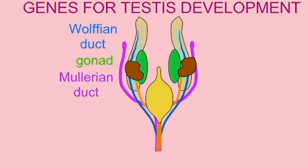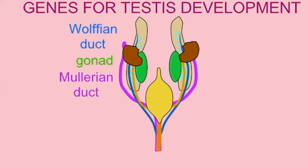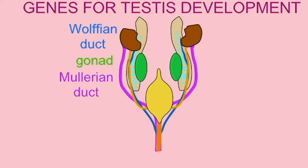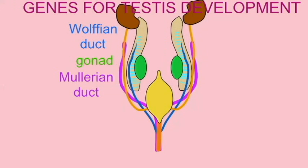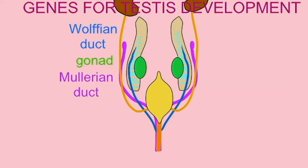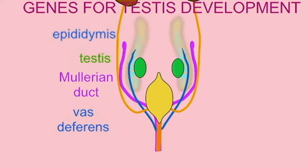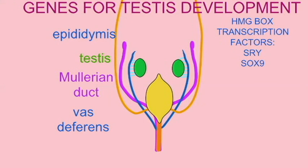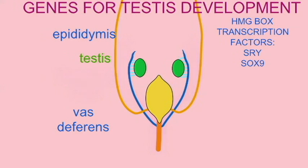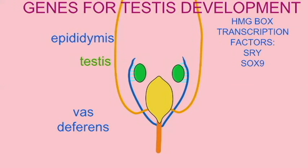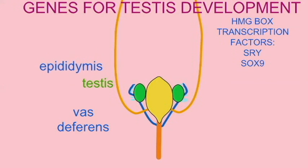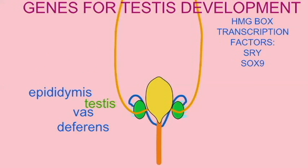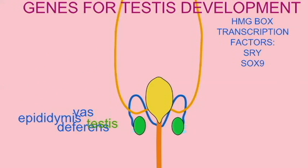In order to activate male testicular development, two transcription factors of the HMG box group are very important: both SRY — the testes determining factor on the Y chromosome — and a related transcription factor known as SOX9.